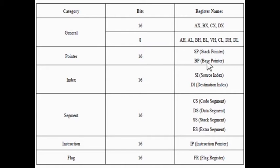Base pointer is 16 bits. Base pointer points to data within the stack segment and can hold any random location in a stack. Next is source index — it is 16 bits and holds offset addresses for the data segment. It also holds source offset addresses of string operations.